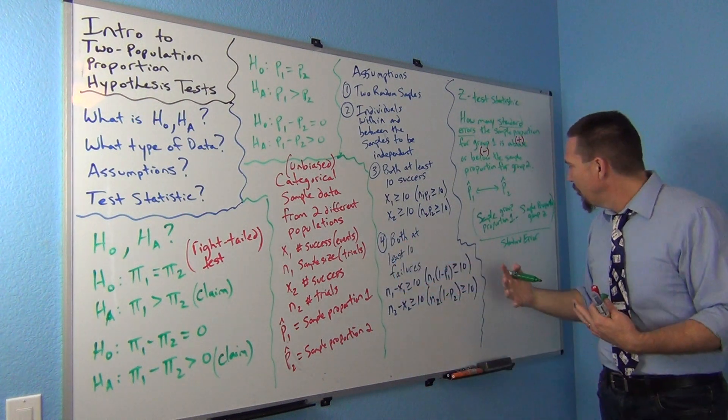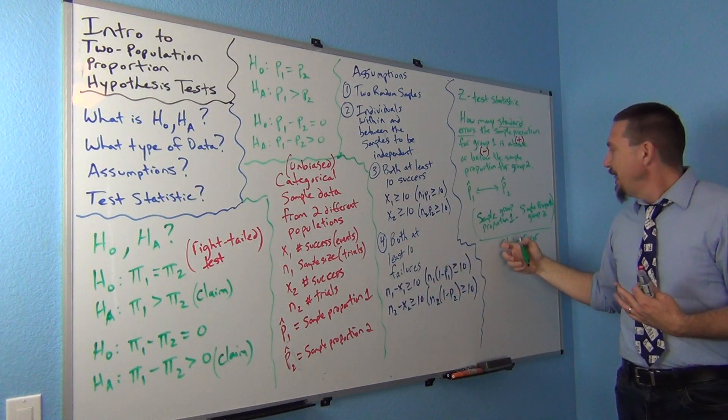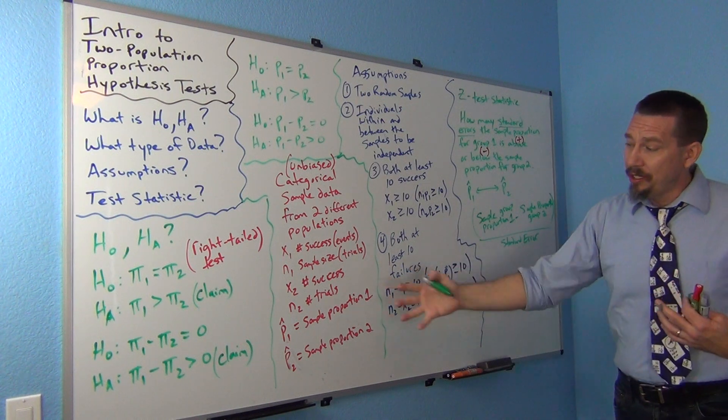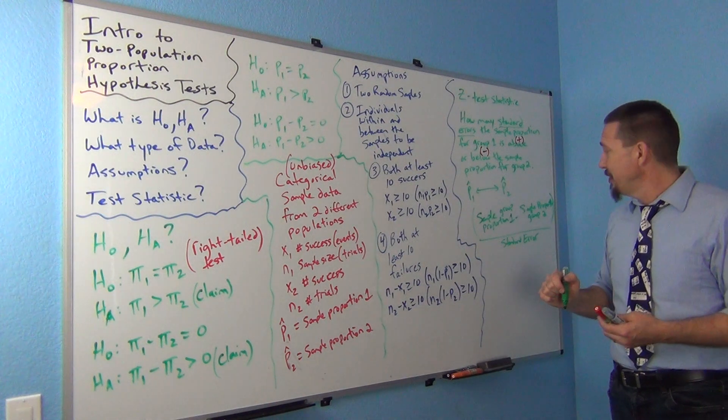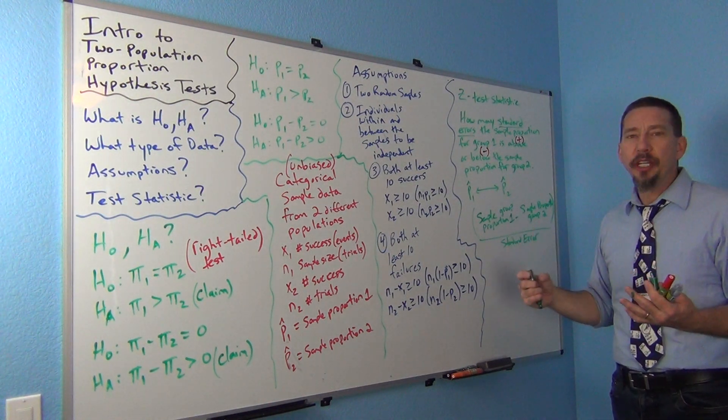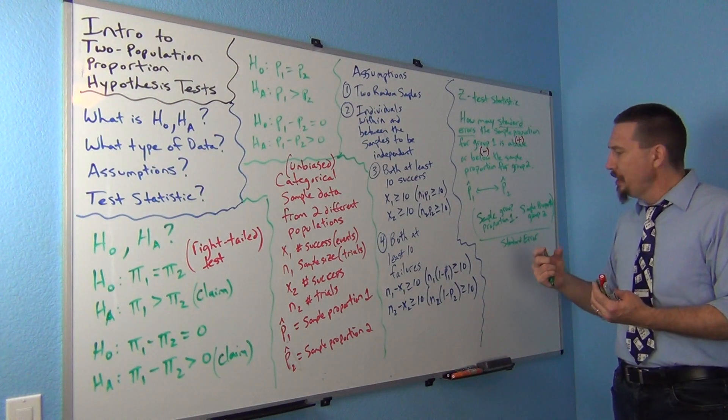So, it just makes a little bit of a correction in your standard error. Makes your standard error slightly more accurate for the test. It's really not a big deal. Even if you use the same standard error formula we used for confidence intervals, it's not really going to change the numbers a whole lot. But we might as well do it correctly. So, pooling.